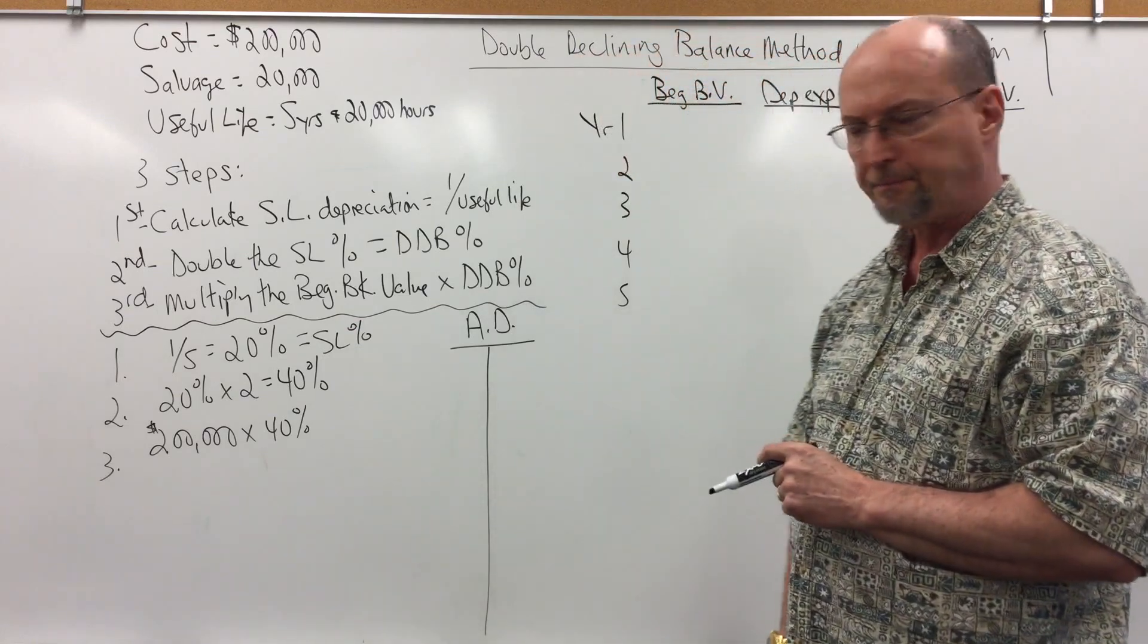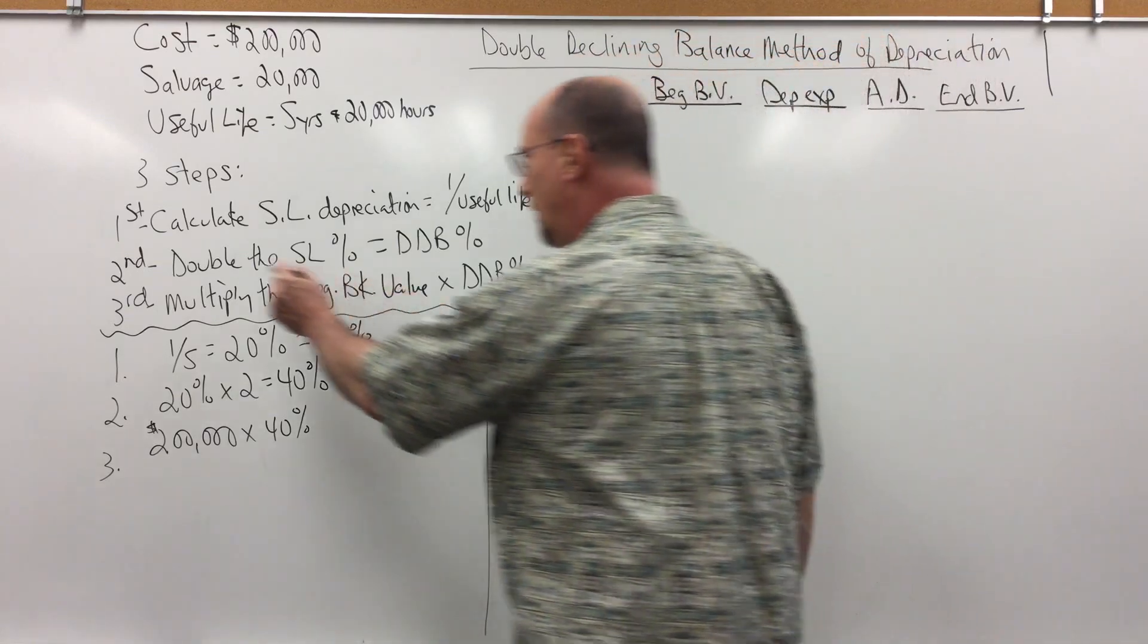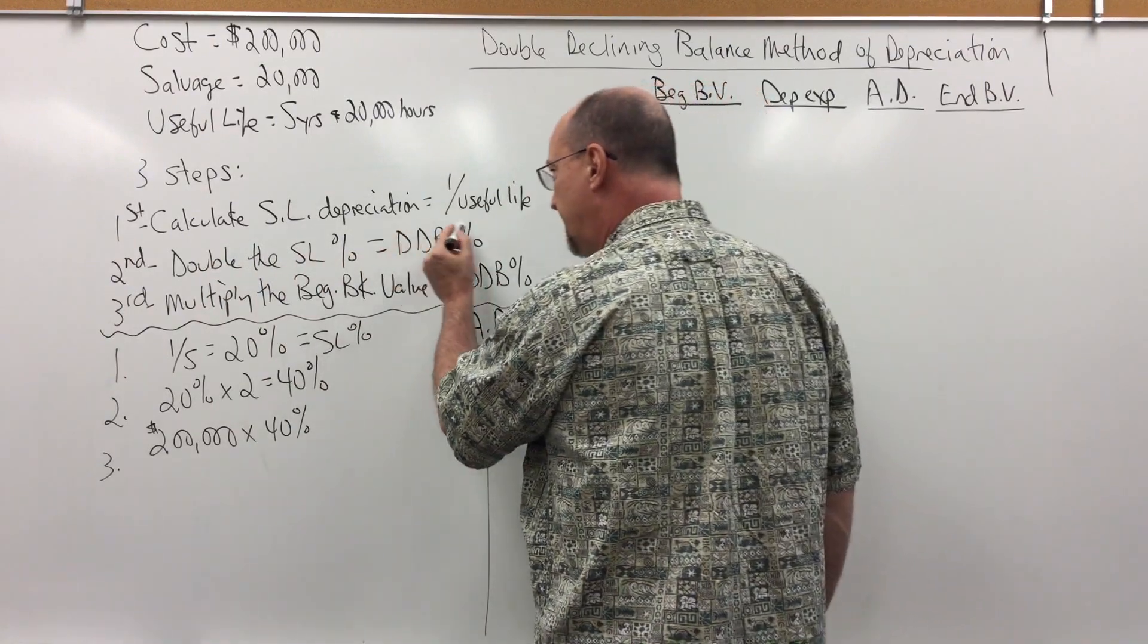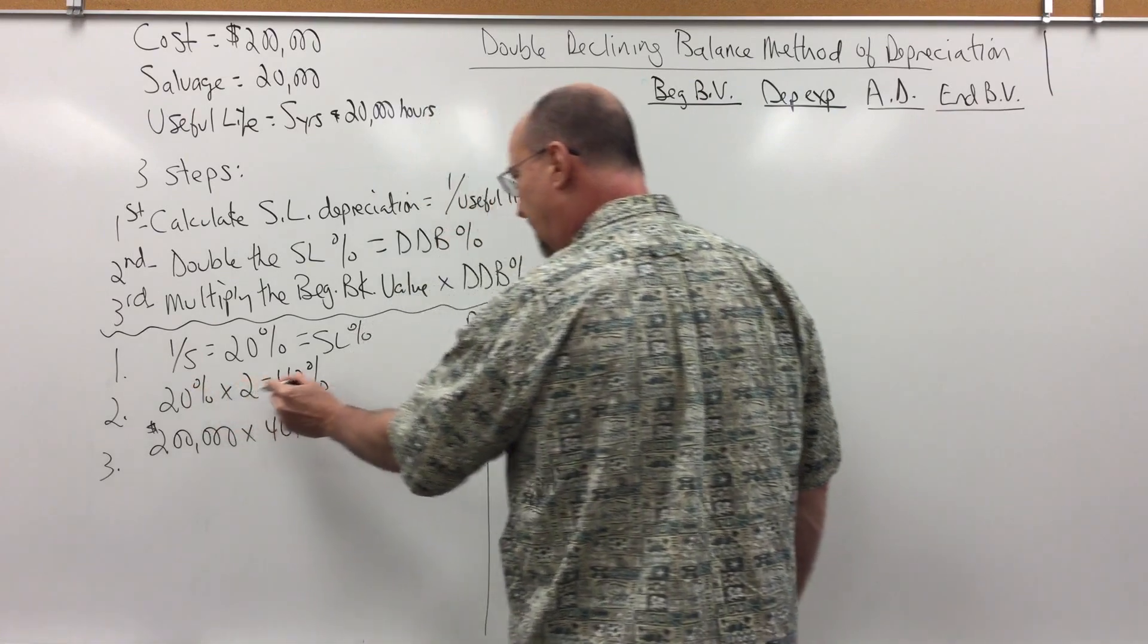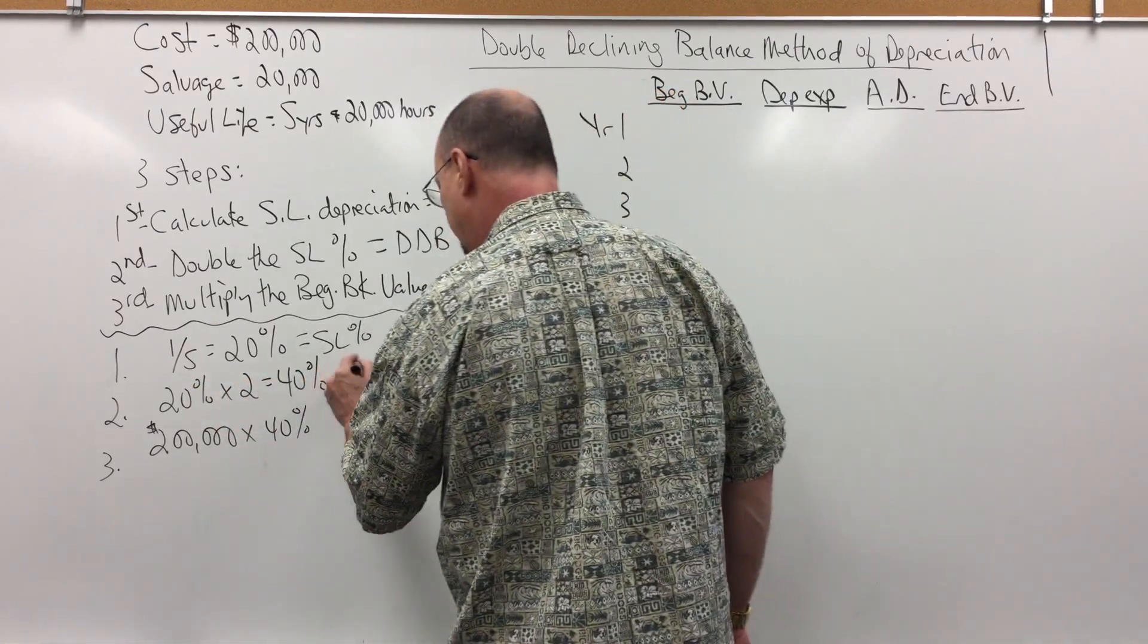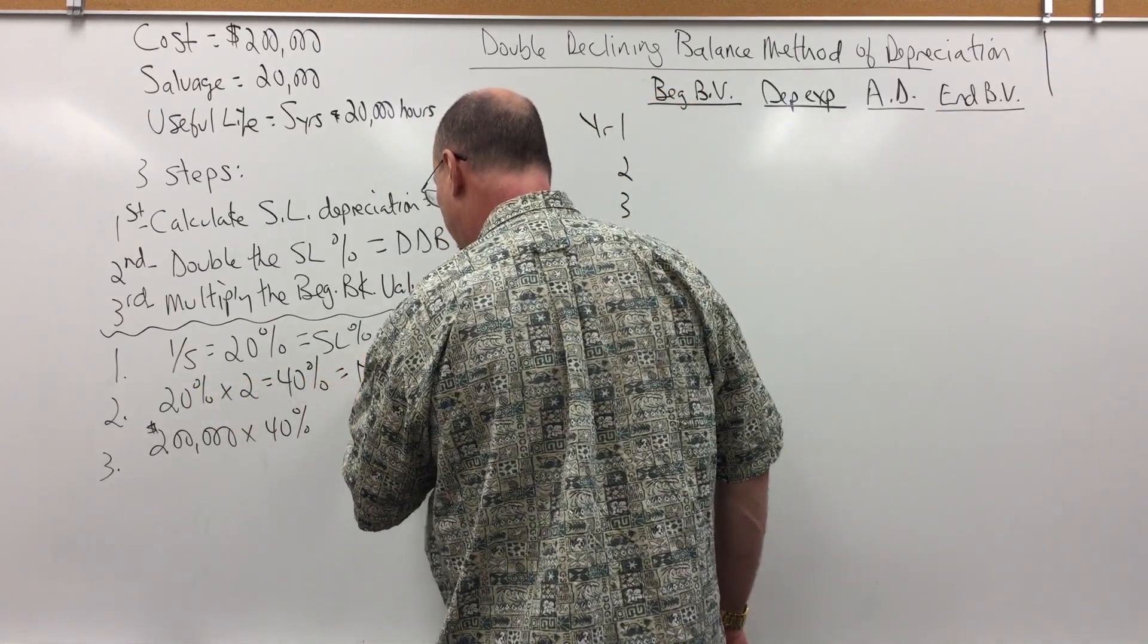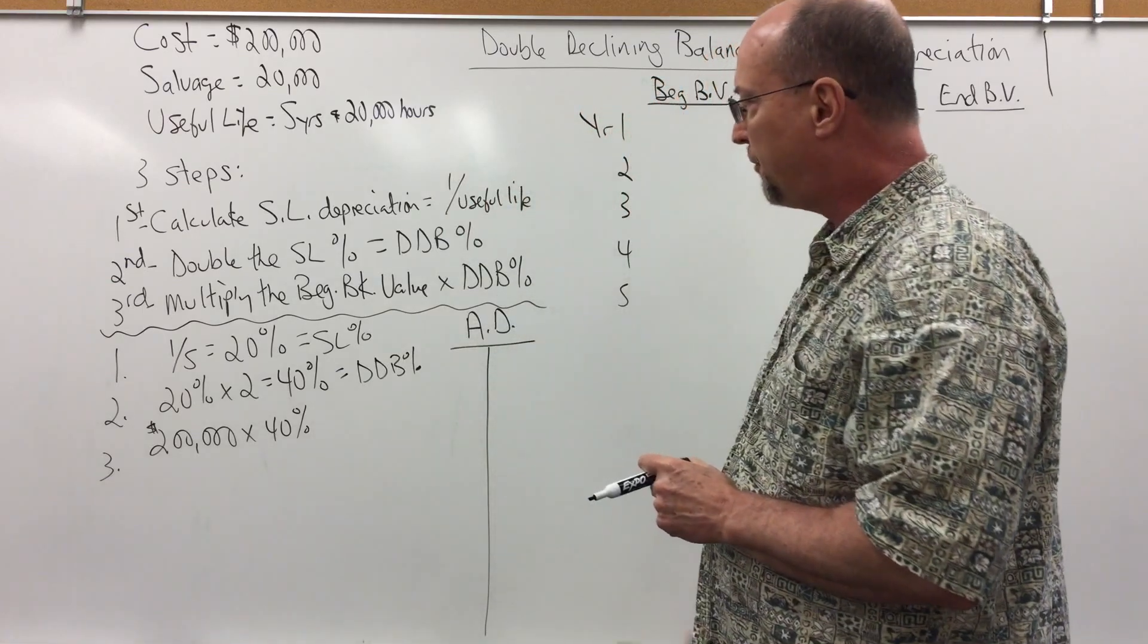Step 2, I double the straight-line percentage and this gives me the double declining balance percentage, 20% times 2 equals 40%. That is my double declining balance percentage, DDB. And step 3,